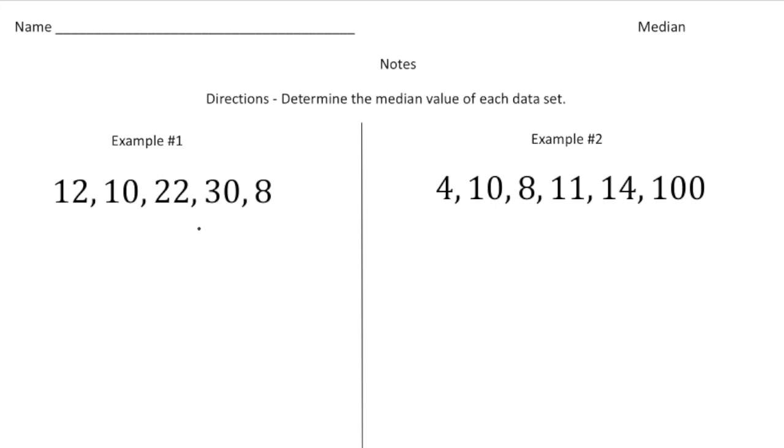So step one, we need to put them in order from least to greatest. So the least number is eight followed by 10 and then 12 and then 22 and then finally 30. Now let me give you a little hint. Anytime you have an odd number of numbers, it's easy because there'll be one exact answer for the median. So here, if you notice, the middle number is going to be 12. So that's going to be our median value of this data set.